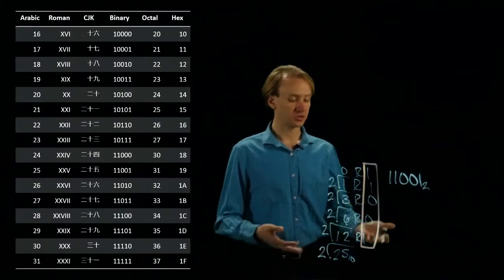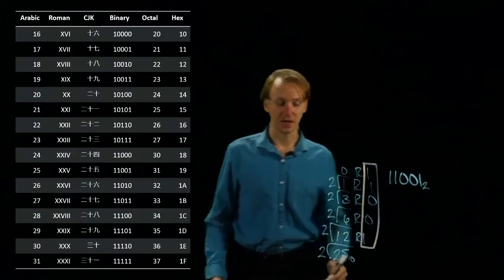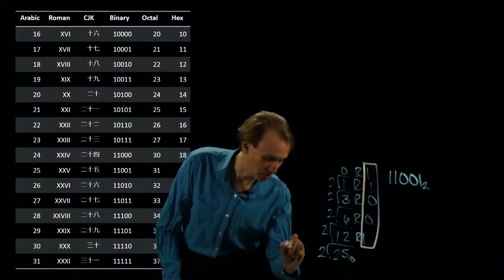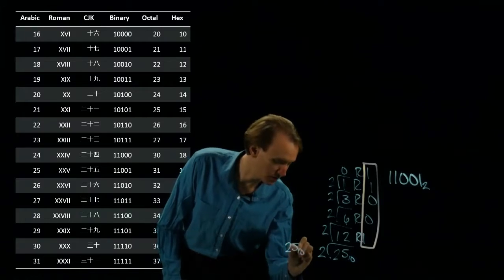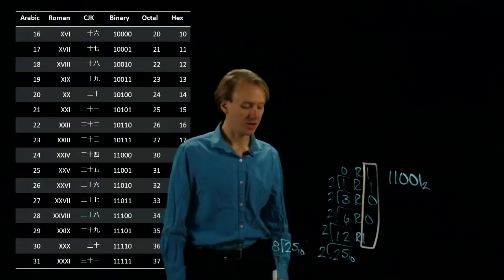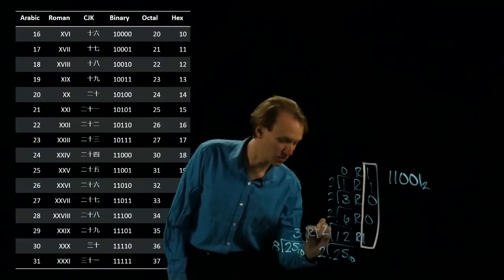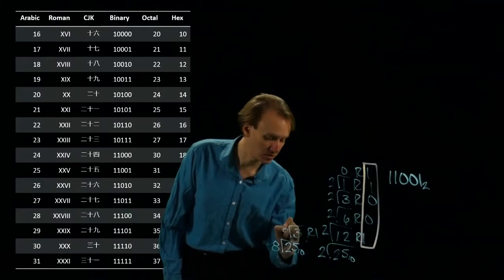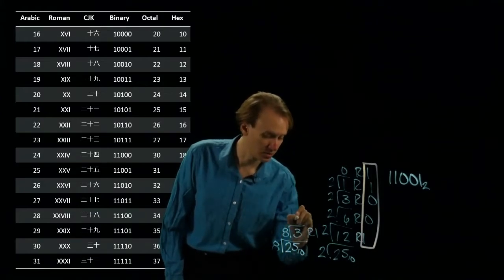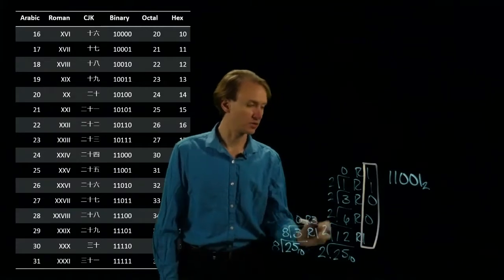If I want to do the conversion to octal though, then I'm going to do division by 8 instead. I'd start with 25 in base 10. 25 divided by 8 will give me 3 remainder 1. And then 3 divided by 8 will give me 0 remainder 3. So I get 31 in octal.